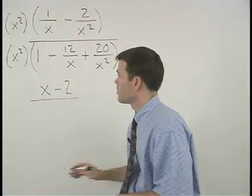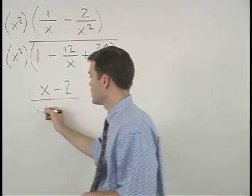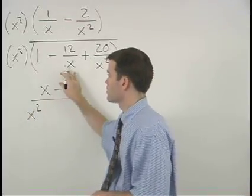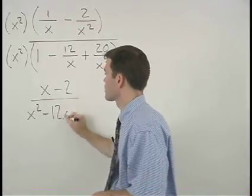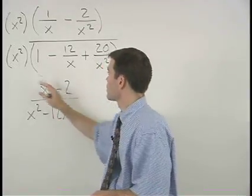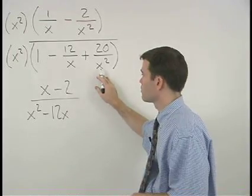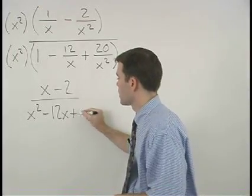In the denominator, x squared times 1 is x squared, x squared times negative 12 over x is negative 12x, and x squared times positive 20 over x squared is positive 20.